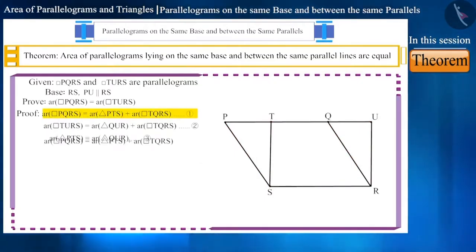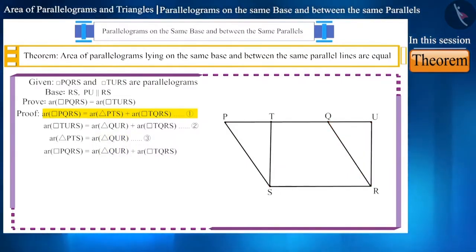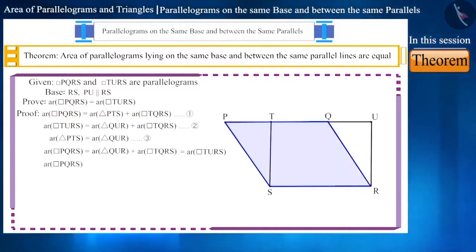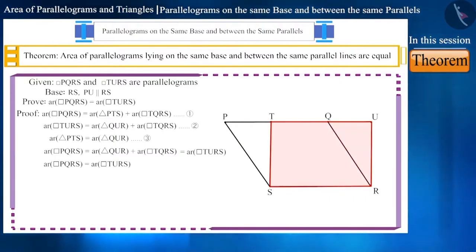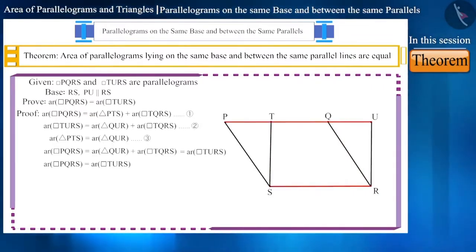Now in Equation 1, if we place triangle QUR instead of triangle PTS, the equation becomes: Area(PQRS) = Area(triangle QUR) + Area(quadrilateral TQRS), which gives us the area of TURS. Therefore, area of PQRS equals area of TURS. And thus, we have mathematically proved that the areas of parallelograms lying on the same base and between the same parallel lines are equal.